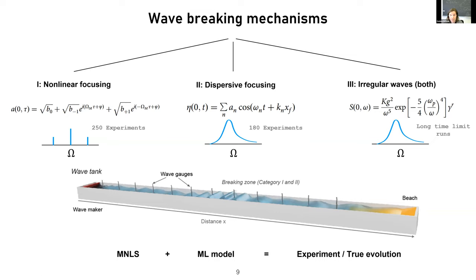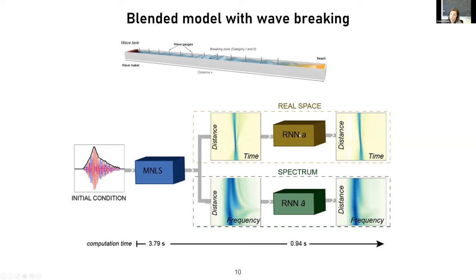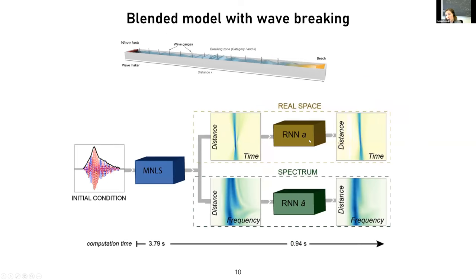Usually with machine learning, you need a lot of data. So we did many experiments for all three wave categories. Just to explain how it should work once the model is trained: like with a normal MNLS, you have some initial condition at some initial position that you know, then you want to calculate the propagation. We split this up for the real space in the frequency domain. This will be wrong if there is wave breaking. For whatever propagation distance you chose, you put that into this recurrent neural network. This would have a memory effect, and this will correct it to give the right evolution.